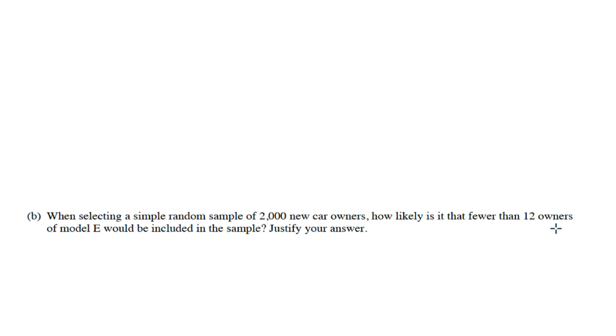But then I read down to part B: when selecting a simple random sample of 2000, how likely is it that fewer than 12... Something went off in my head. When you have questions worded like this, it is probably binomial. This sounds super binomial to me. Out of 2000, what is the probability fewer than 12? We have to wrap our head around the idea that that means 11 or less.